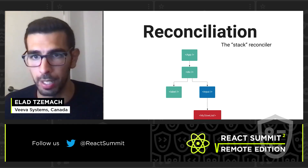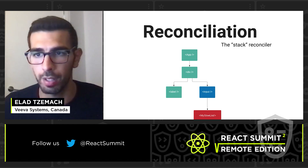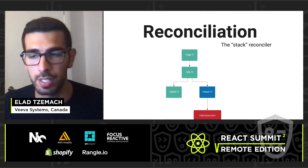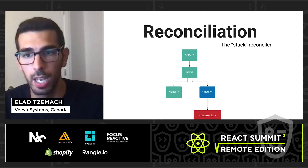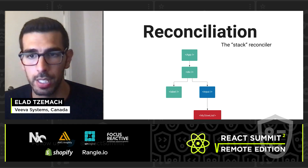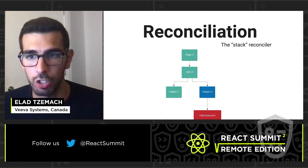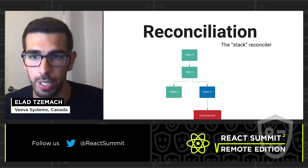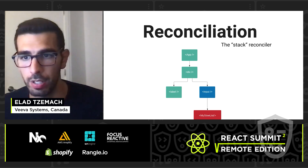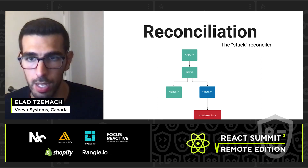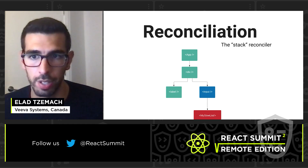Let's look at our app in the form of a tree connecting all the components to understand why this is happening. The stack reconciler is the implementation powering React 15 and earlier. What's important to know is that if the state of the app has changed, React will traverse the component tree recursively, asking each component what it renders based on that state change. Based on the result of the render function, it would create a virtual DOM and update the DOM with that result. This reconciliation algorithm is a purely recursive algorithm, and an update results in the entire subtree being re-rendered immediately.